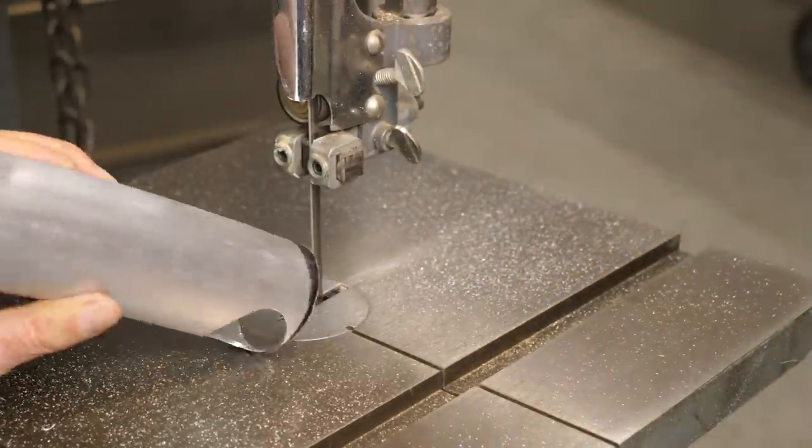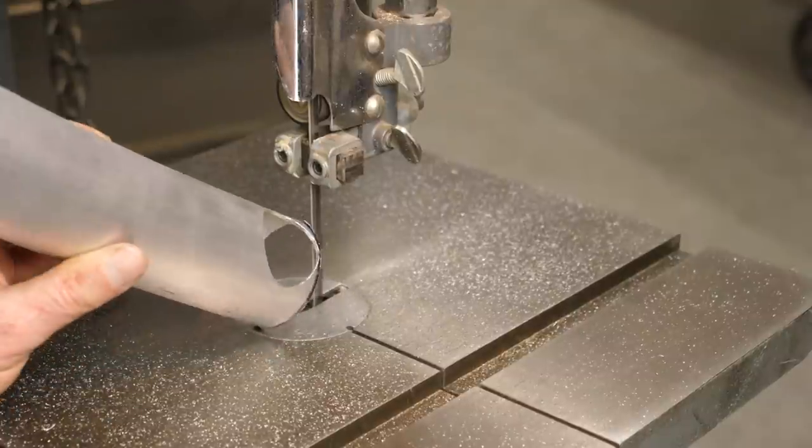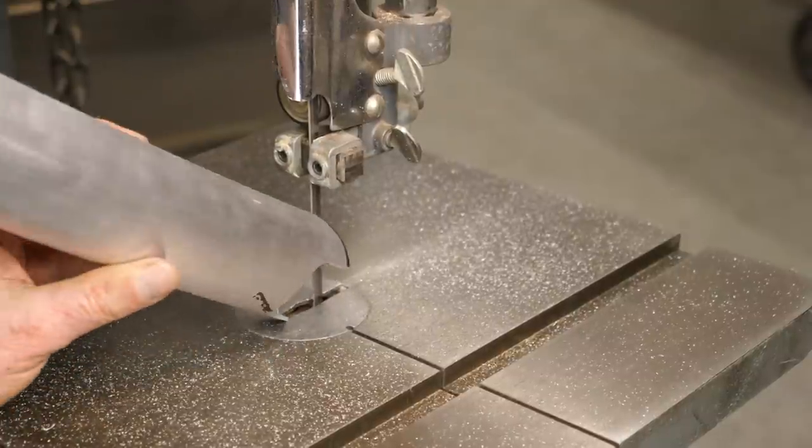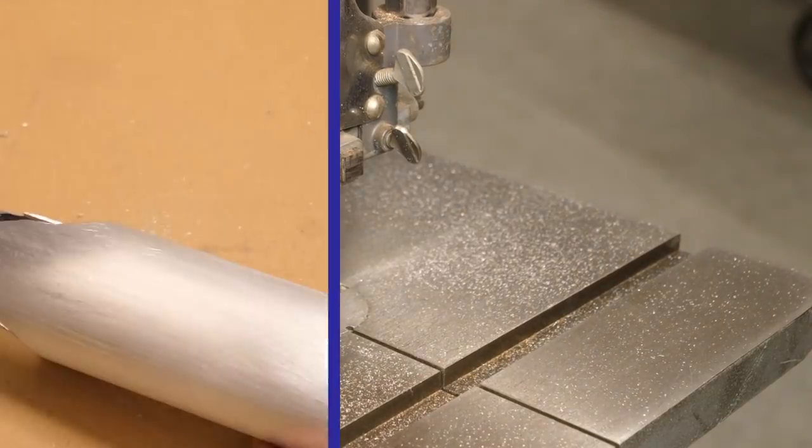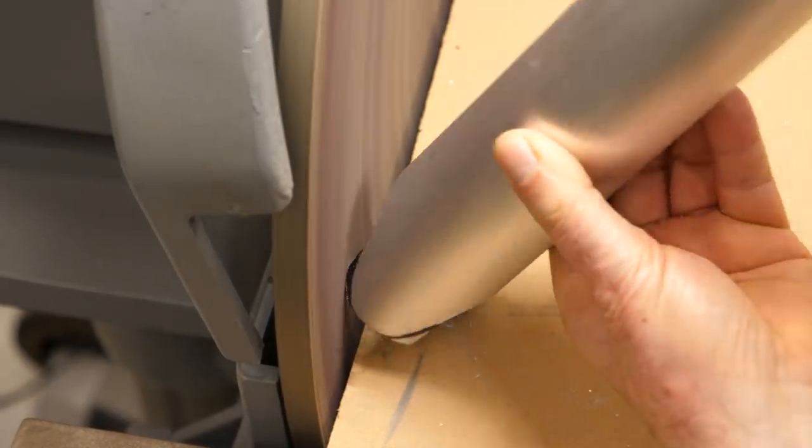A band saw is used to remove the bulk of the waste and a disc sander is used to round the ends of the notched area.